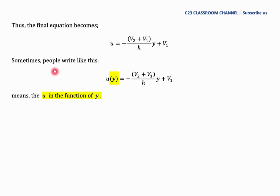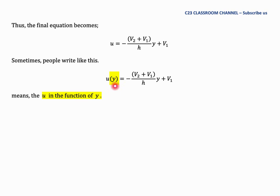The final result can also be written as u(y) = [(−v2 + v1)/h]·y + v1, where u(y) means u as a function of y — not u multiplied by y. Students sometimes misread this notation, so please be careful: u(y) denotes a functional dependence on y.